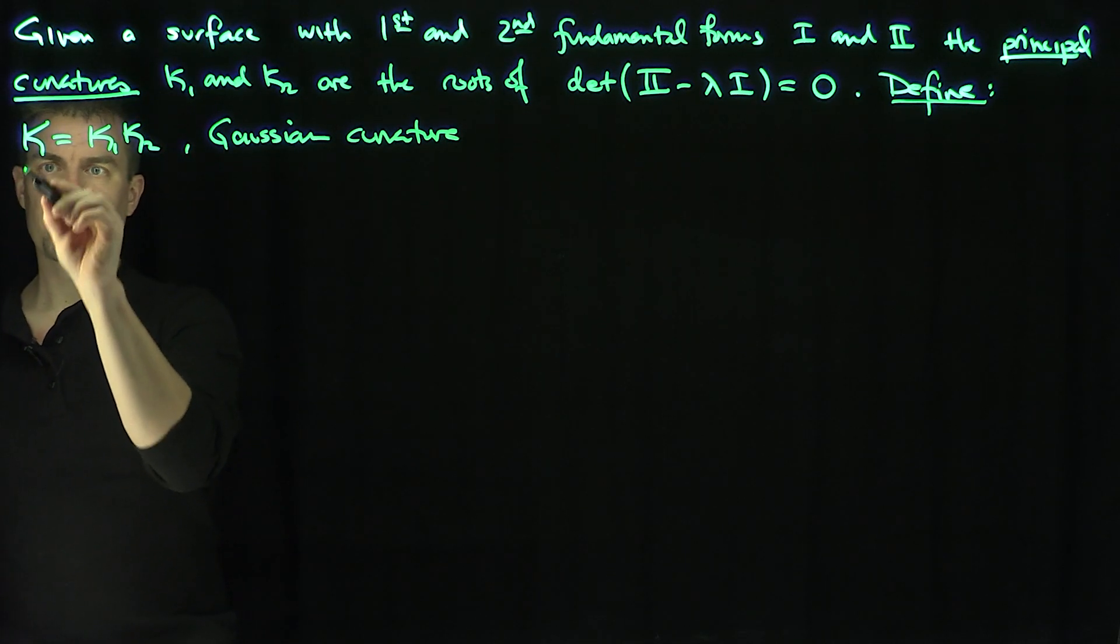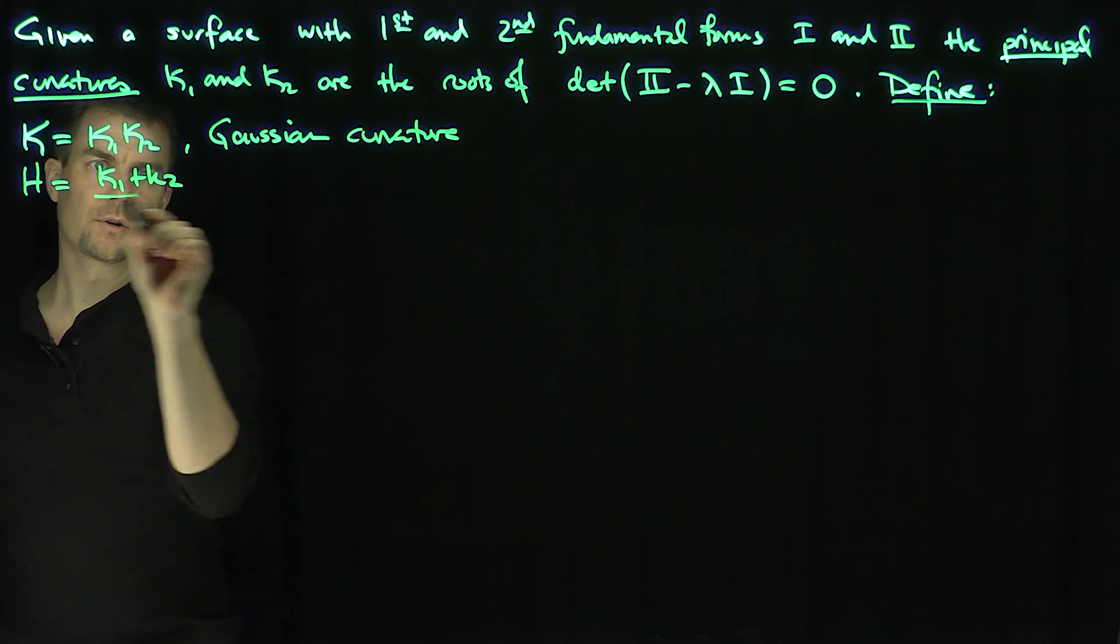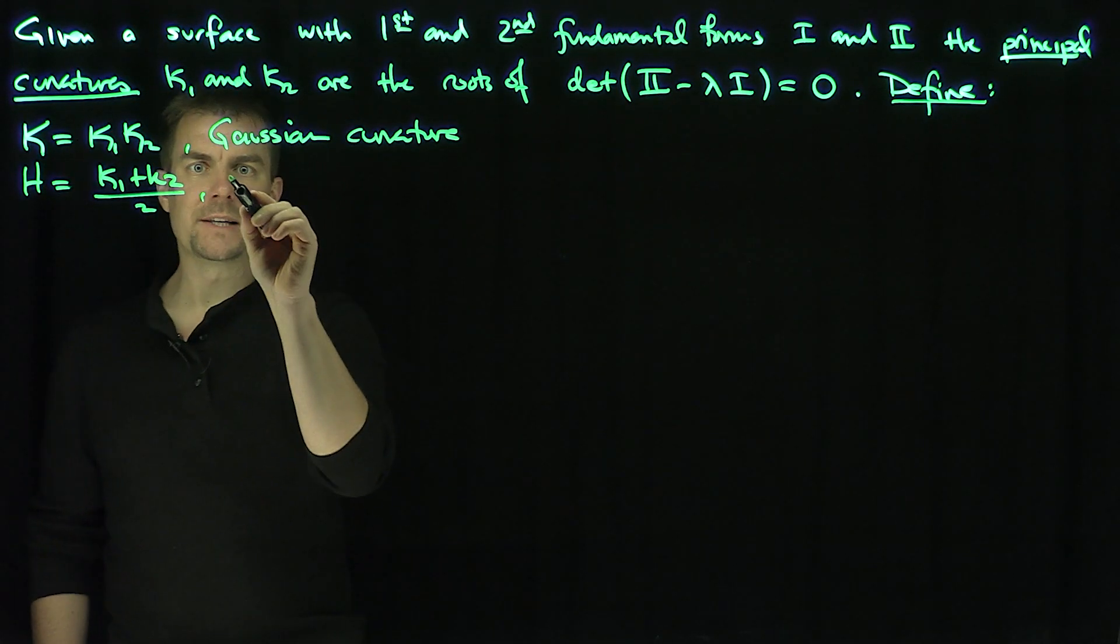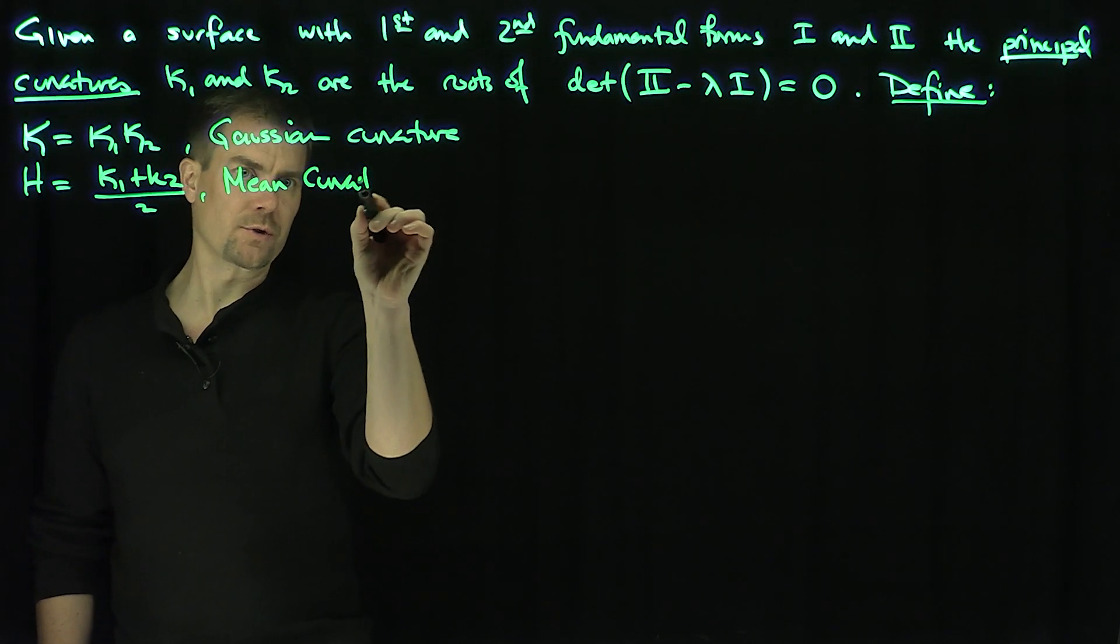And we define h, which is the average of these things, arithmetic average over 2. And that is the mean curvature. Mean curvature is also really important.